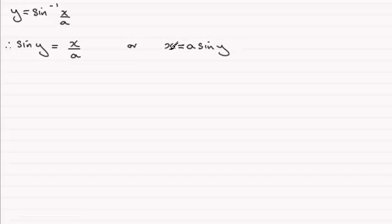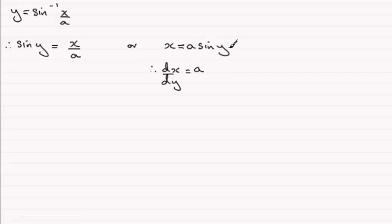If I differentiate this with respect to y we get dx by dy equals the constant a multiplied by the differential of sine y, which is cosine y. We'll return back to this later on.